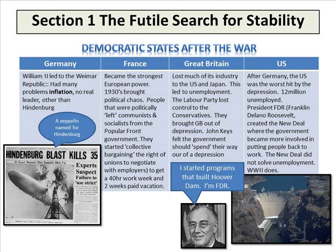People that were politically left — communists and socialists — formed the popular front government. They started collective bargaining, the right of unions to negotiate with employers, to get a 40-hour work week and two weeks of paid vacation. In Great Britain, they lost much of their industry to the U.S. and Japan. Remember, the Industrial Revolution pretty much started in Great Britain, so this was a huge change to their entire economic backbone. The Labor Party lost control to the conservatives, who brought Great Britain out of the Depression.